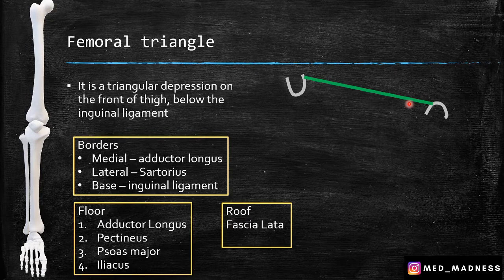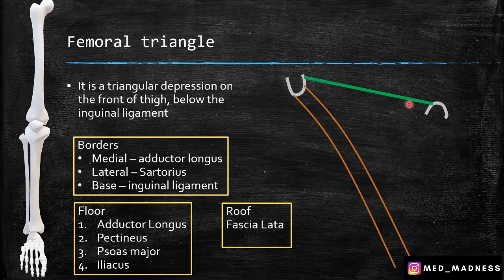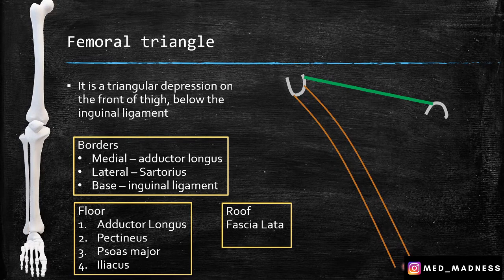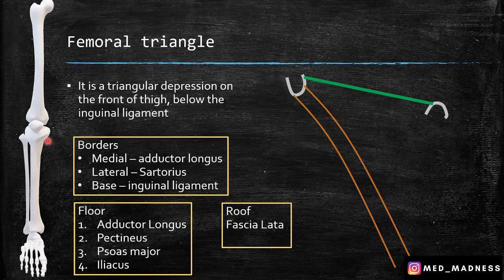Which is the longest muscle of the human body? Sartorius. The sartorius extends from the anterior superior iliac spine and gets inserted to the proximal portion of the tibia. This is the longest muscle of the human body and forms the lateral border of the femoral triangle.